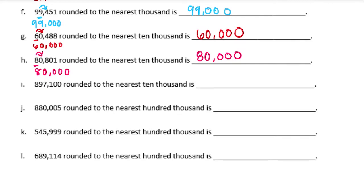897,100 rounded to the nearest ten thousand. The nine is in the ten thousands place. Next to it is a seven — five or higher — so the nine rounds up to a ten. When we do that, the nine becomes a zero and we add one to the next place value. So that one gets added to the eight, making it a nine, and everything else becomes zeros. We get 900,000.